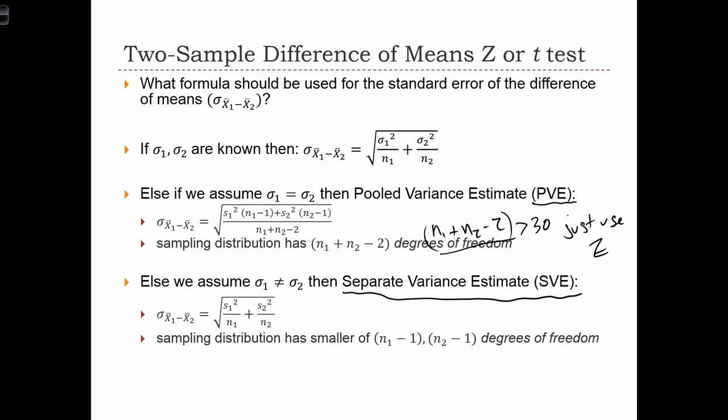In this case, we have a t distribution for the sampling distribution, with whichever is smaller, n1 minus 1 or n2 minus 1 degrees of freedom. Again, if both n1 minus 1 and n2 minus 1 are greater than 30, we can just use the z.